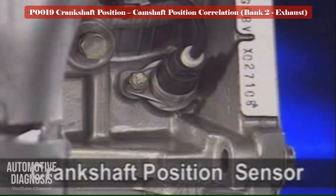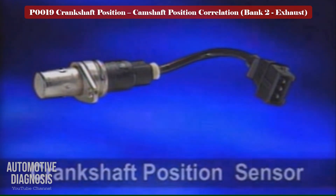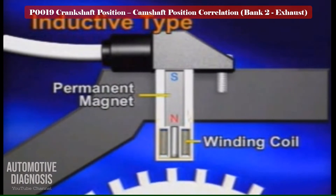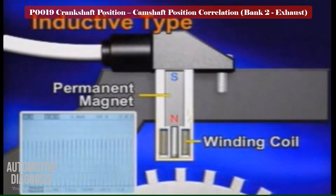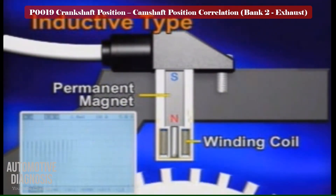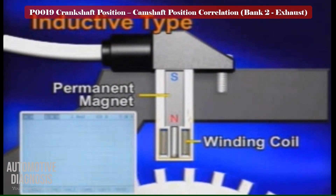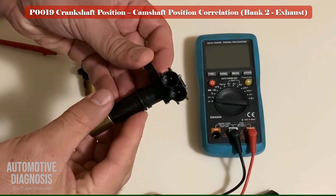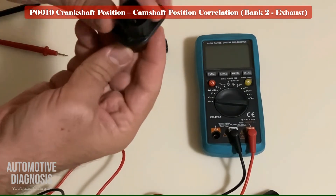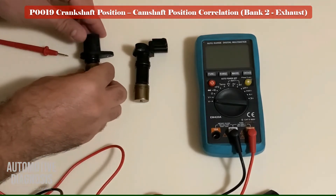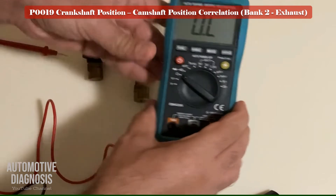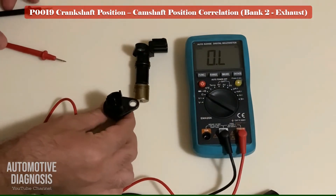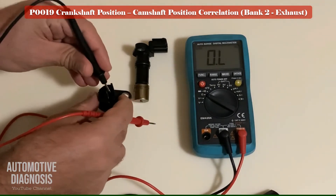Crankshaft position sensor testing procedure. The crankshaft position sensor detects the crankshaft position and sends the signal to the PCM. There are two types: the inductive type and the hall IC type. The inductive type consists of a permanent magnet and a winding coil — the magnet flux field responds as the sensing teeth rotate, generating AC voltage. For testing the inductive sensor, measure the internal resistance with a multimeter and compare it with the specification in the workshop manual. Replace the sensor if the resistance differs from the workshop manual specification.